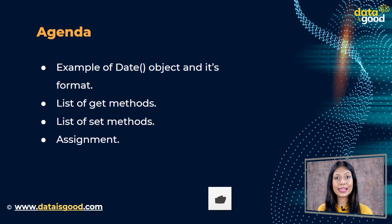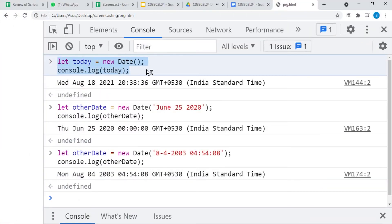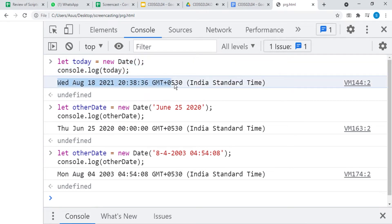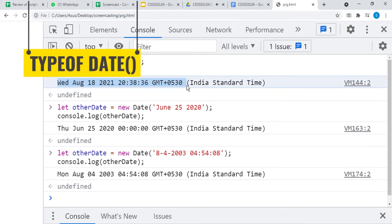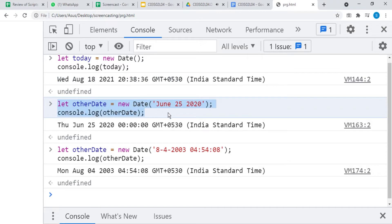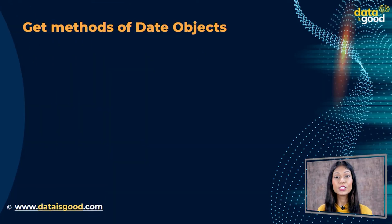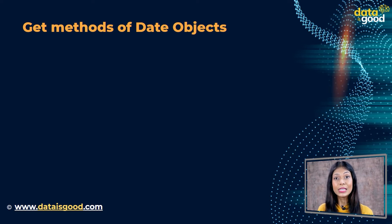JavaScript has a default object called the Date object. It allows us to work with dates. We created a Date object for today and displayed it — it returned today's date and time. The type of date is object. Sometimes you want another date and time, so we can do that as well. You can write the date in different formats. JavaScript allows us to use some methods which help us get information about date and time.